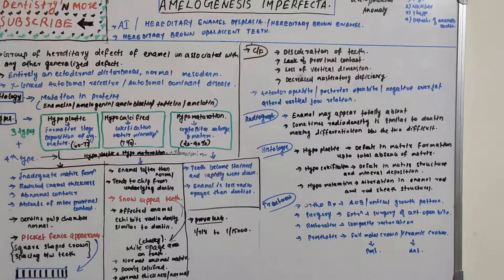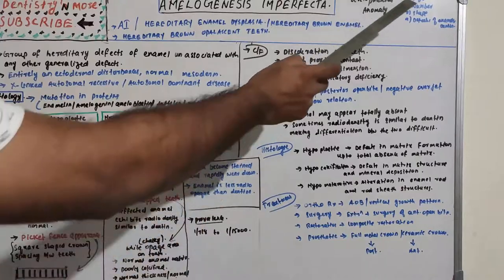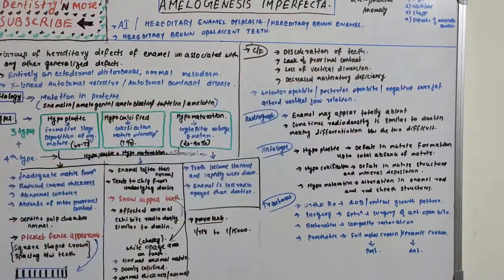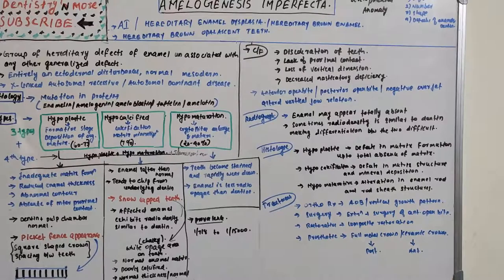Hello everyone, welcome back to a new session in Dentistry and More. Today's topic is Amelogenesis Imperfecta. In developmental anomalies, we have learned various categories including anomalies of size, number, shape of teeth, and defects of enamel and dentine. Amelogenesis Imperfecta falls under the defects of enamel.